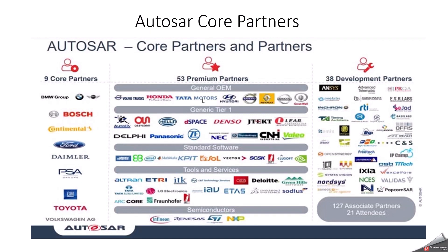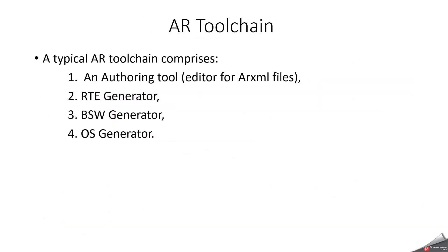Here you can also see who are the OEMs — original equipment manufacturers — and who are the Tier 1 suppliers. For example, if you are getting a stack from KPIT, then you need a specific tool to work on it. Basically, in the AutoSAR toolchain, it has an authoring tool for editing your XML file, for RTE generation, base software generation, and OAS generation. You need a specific tool for all these configurations.